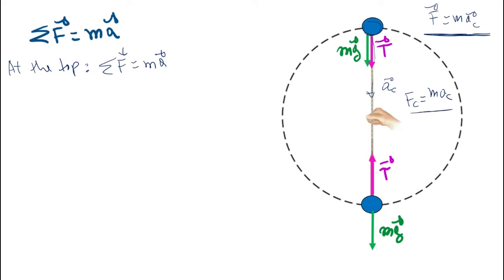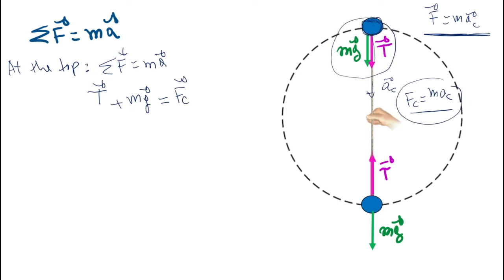The net force, which is the centripetal force, is the sum of forces at the top. We have the tension and the weight of the object, and this equals the centripetal force. The net force — the total forces applied on the object — equals mass times centripetal acceleration. Taking the direction of acceleration as downward, both tension and mg are downward, so all forces are in the same direction as the centripetal force.